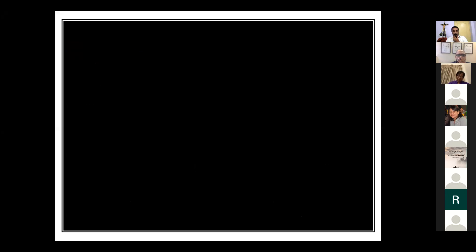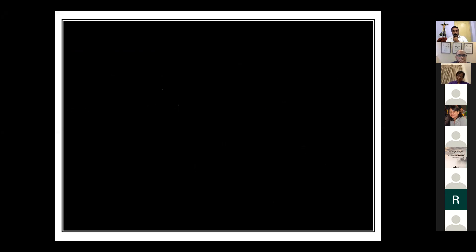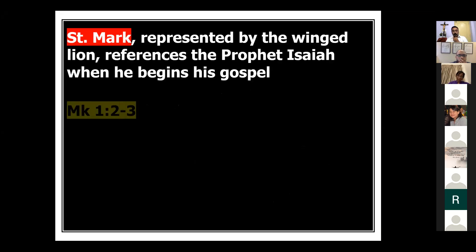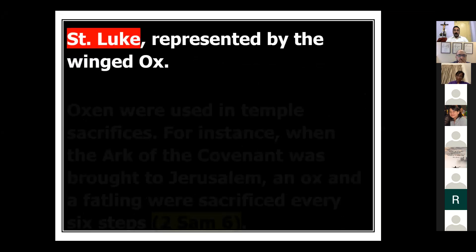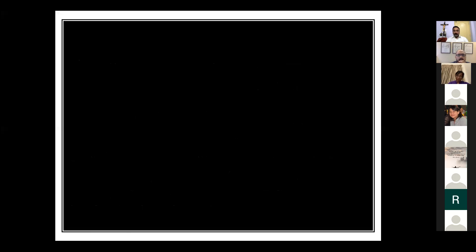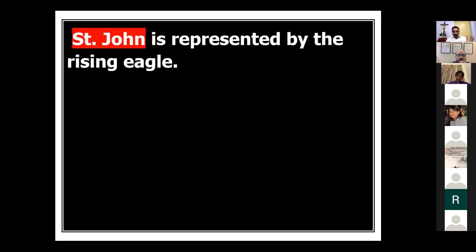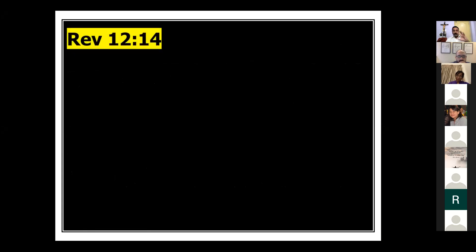We also saw how John writes his gospel, keeping in mind four important aspects. The church always wants to read the Bible canonically — meaning the entire Bible is a single unit. We have to read it as a single unit, seeing the entire message together.